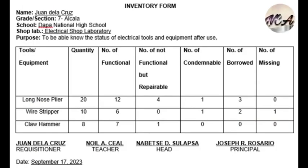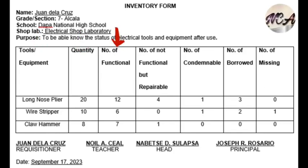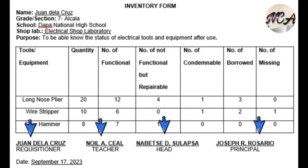Here is a sample inventory form. Similar to the purchase requisition form, the heading comprises the name of the form. The top left portion includes the name, grade, section, school, shop lab, and the purpose of filling up the form. The table part contains the key elements: tools and equipment, quantity, number functional, number not functional but repairable, number condemnable, number borrowed, and number missing. The bottom part includes the signatories and the date of filling up the form.